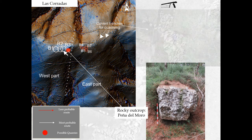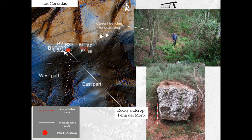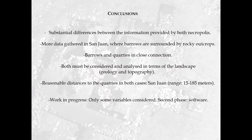LiDAR was useful to identify huge trenches in the eastern part, not far from the tumuli. The neighbours of Las Corradas village remember that the trenches were used as quarry for building and repairing the houses of the village. In other words, we have an area with rocks and resources for building. To sum up, although further analysis will be necessary, we can stress some points.